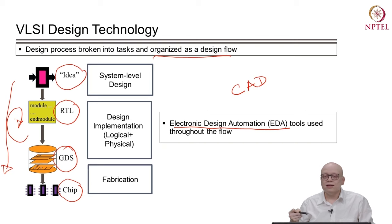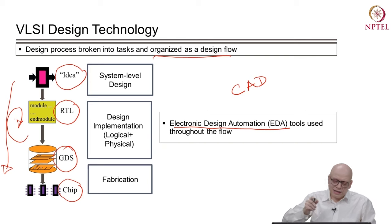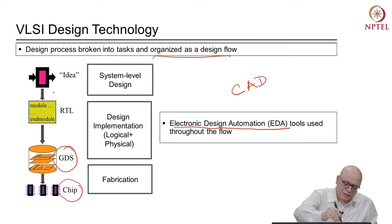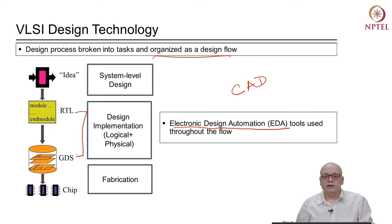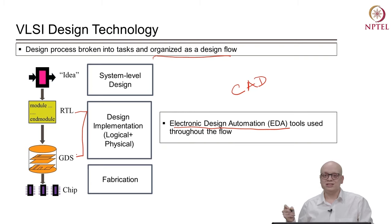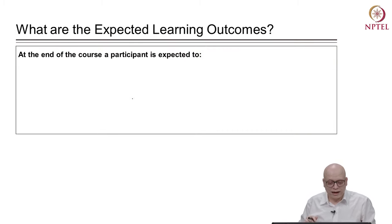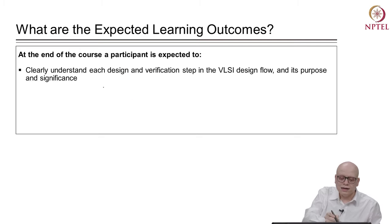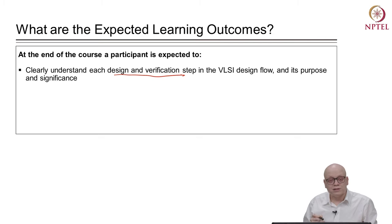So in this course, we'll be looking at all these complications of the design flow. In this flow, we will particularly be focusing on the part from RTL to GDS — meaning how do we transform a design at the logic level, which is RTL, to GDS, which is the layout. We will be concentrating on this part because this is an area where lots of design effort is needed. That's why the name of this course is VLSI Design Flow RTL to GDS. At the end of the course, a participant is expected to clearly understand each design and verification step in the VLSI design flow and its purpose and significance.